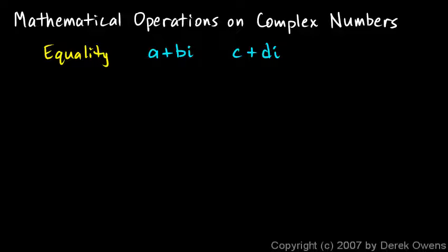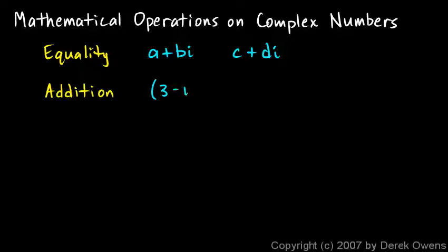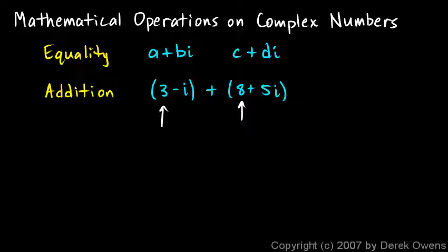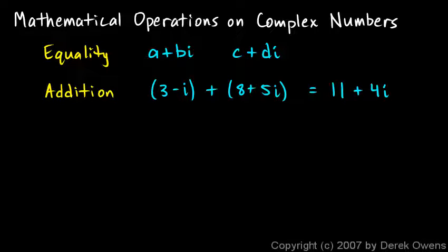Adding and subtracting complex numbers is pretty easy. Here's an example: (3 minus i) plus (8 plus 5i). To add these, I simply add the real parts: 3 and 8 give me 11. Then I add the imaginary parts: negative i and 5i give me 4i. So the answer is 11 plus 4i, which is in standard form.